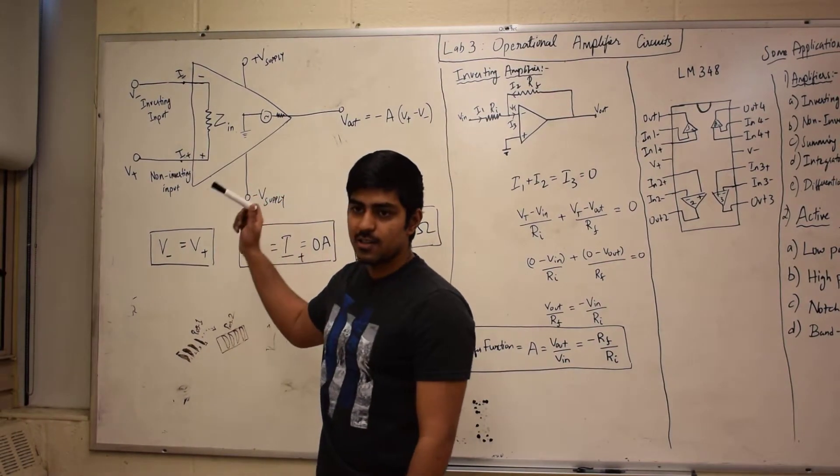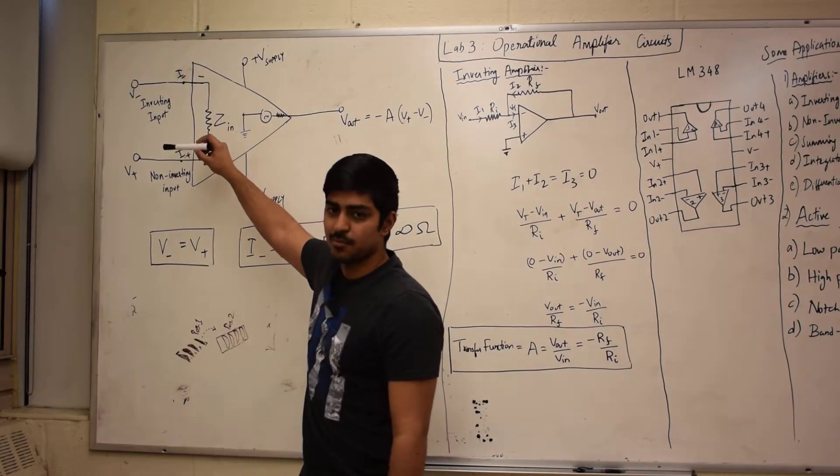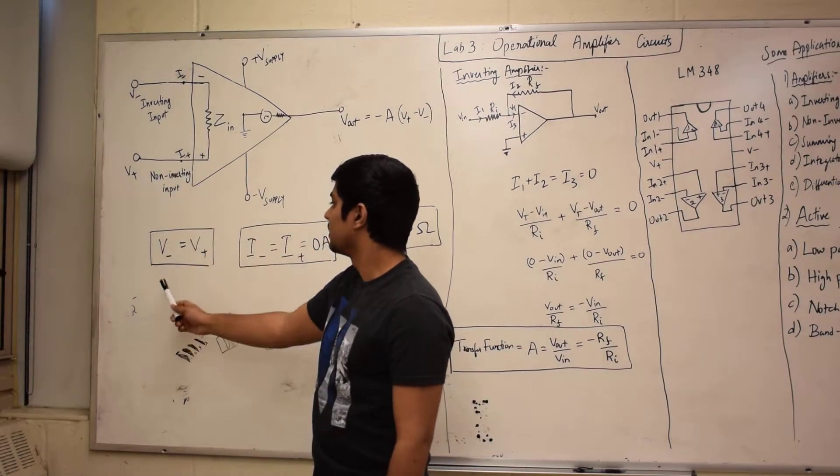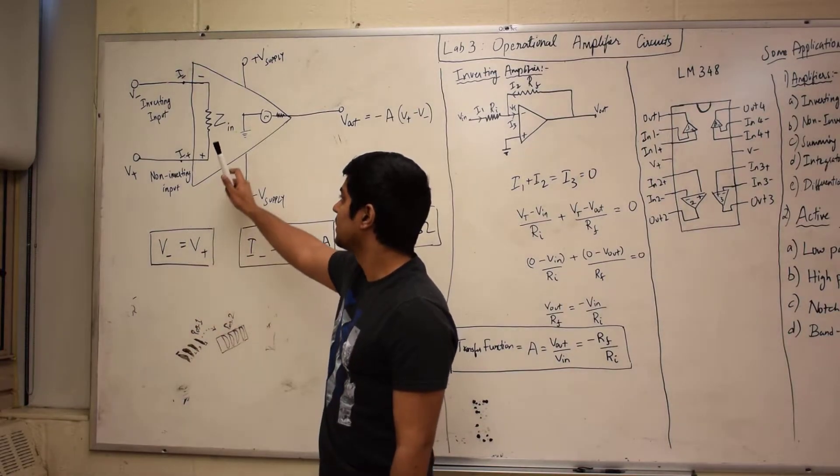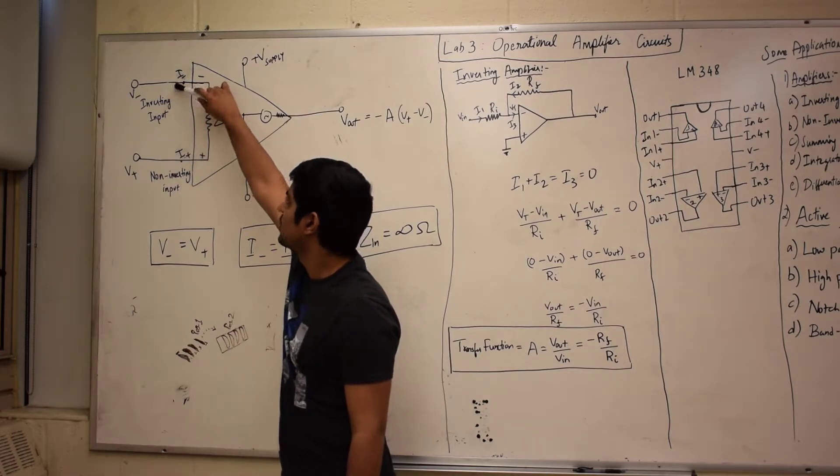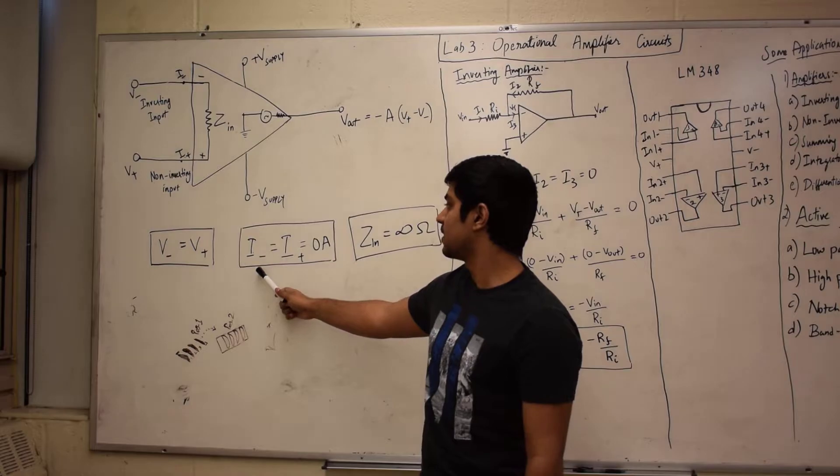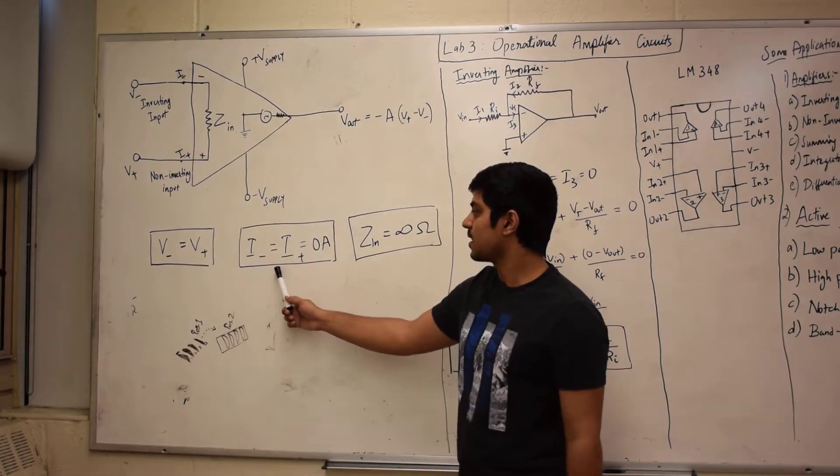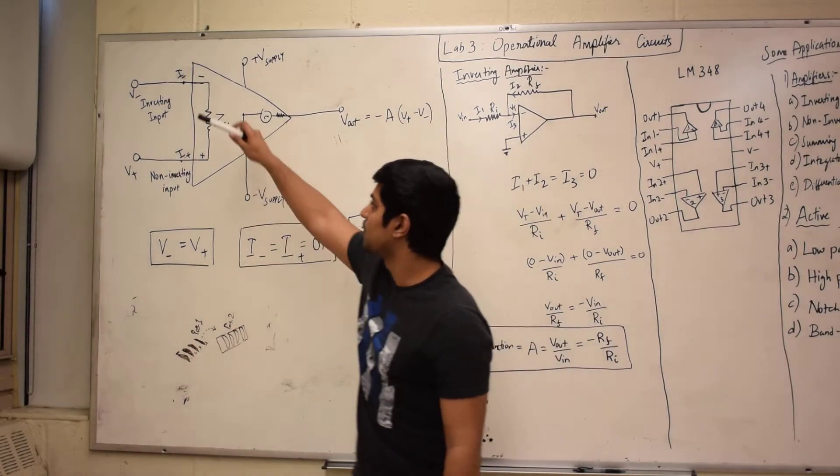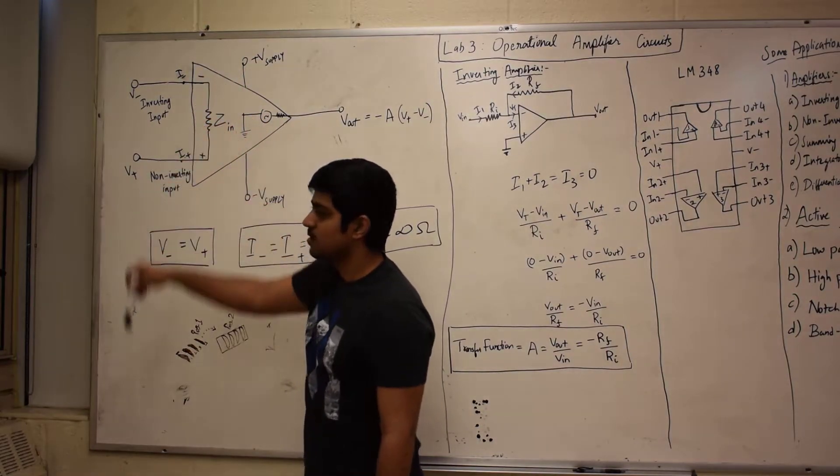Op-amps always try to equalize the voltage at both terminals, so V+ and V- are always equal. The voltage at this point and the voltage at this point are always equal. The second thing is that I- and I+ equals zero, so the current at this junction and this junction is always zero.